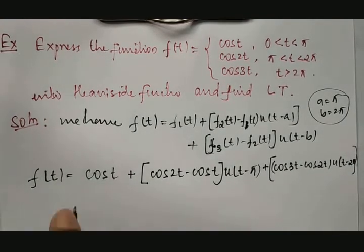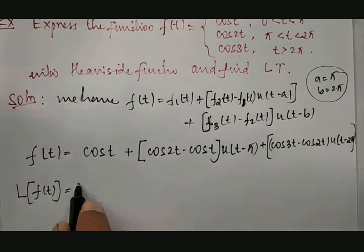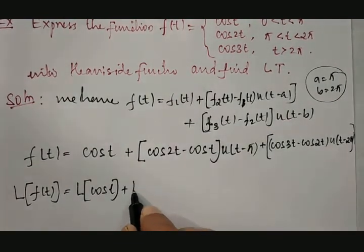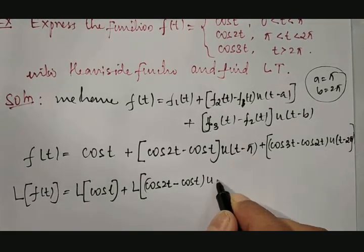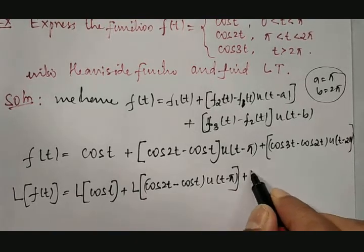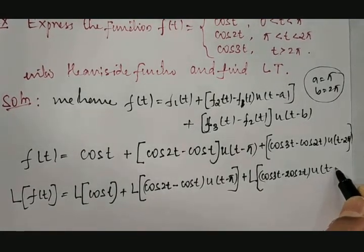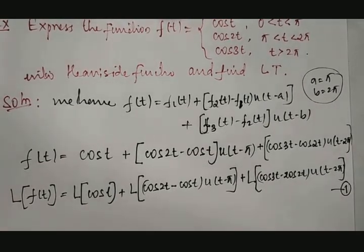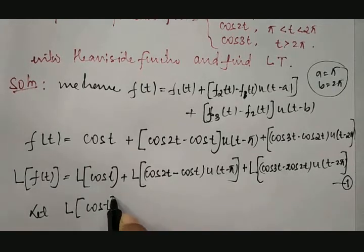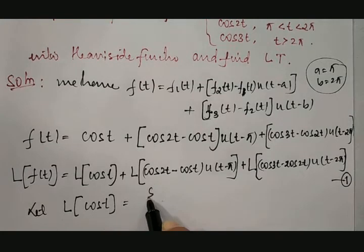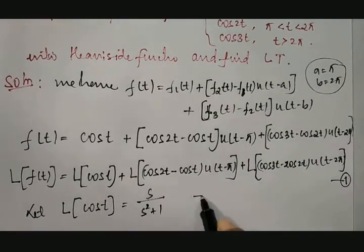Applying Laplace on both sides, we get: L{f(t)} = L{cos t} + L{(cos 2t − cos t)·u(t − π)} + L{(cos 3t − cos 2t)·u(t − 2π)}, which we call equation 1. Separately, the Laplace transformation of cos t is s/(s² + 1), which we call equation 2.